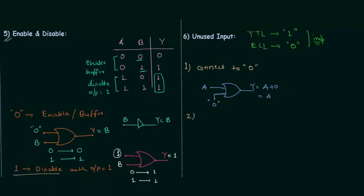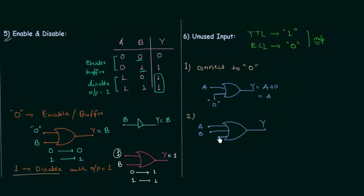For a 3-input OR gate with output Y, where first input is A, second input is B, and the third input is unused — we can connect this unused input to B, or simply connect it to A. This gives us A OR B OR B, which simplifies to A OR B.